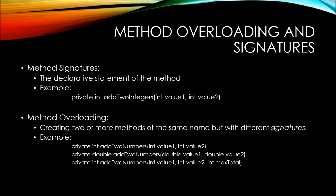Along with the other two method declarations, we can have yet another AddTwoNumbers with a return data type of int, but with a third parameter — a max total. This could be a maximum total for the value anticipated to be returned. If value1 and value2 added together are greater than the max total, then max total would be returned instead. All three of these method declarations have the same name but something different in their signature.